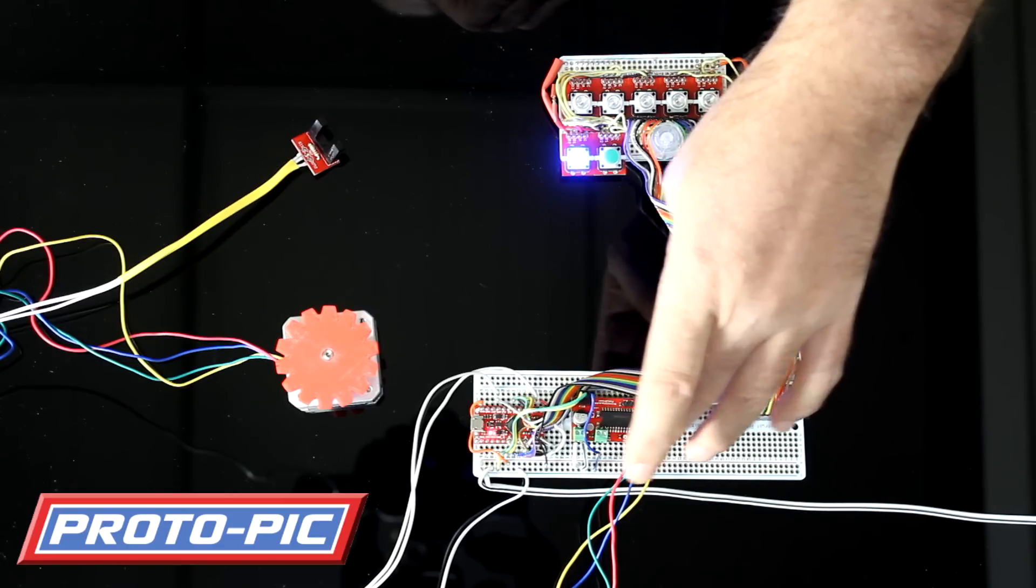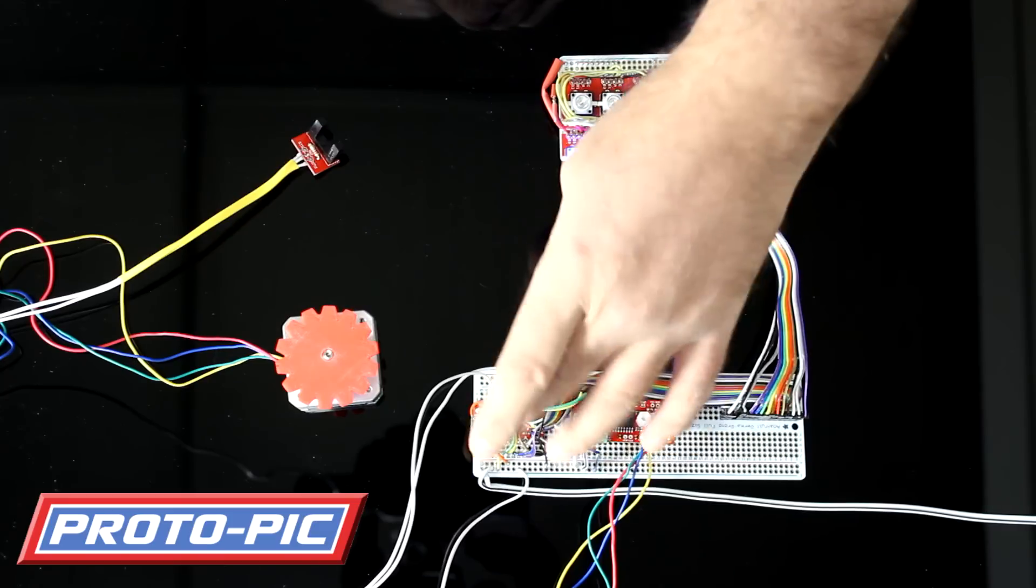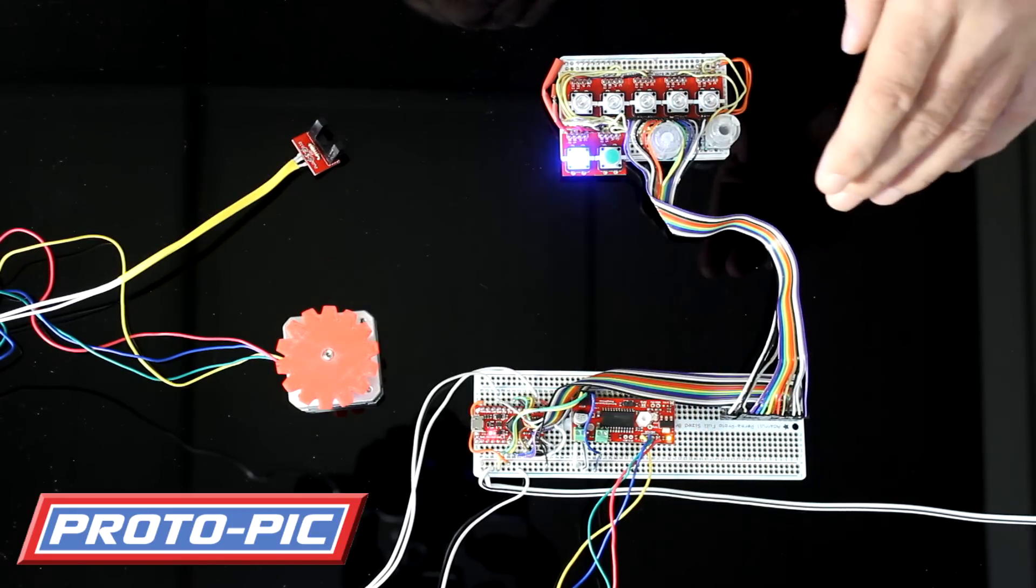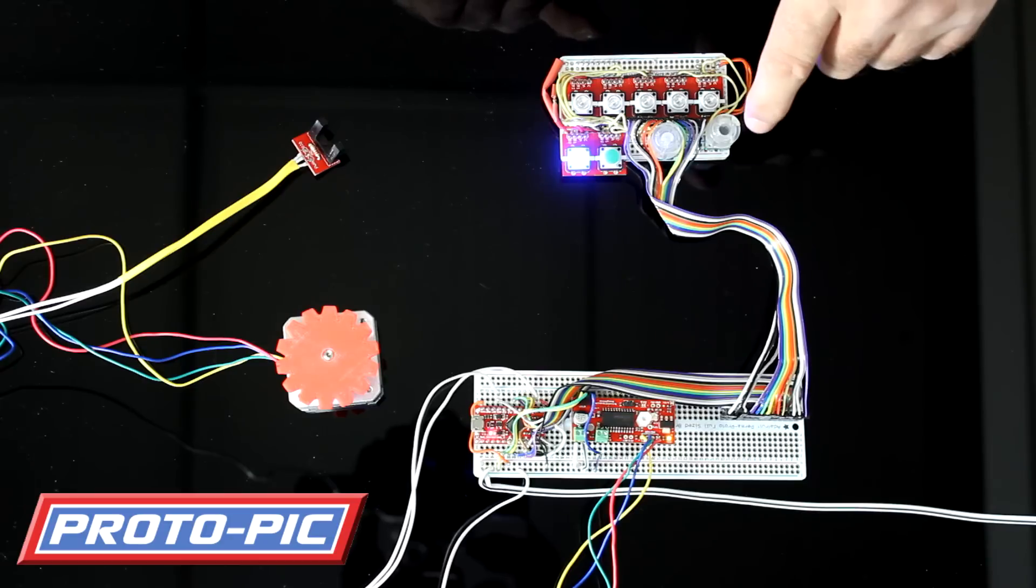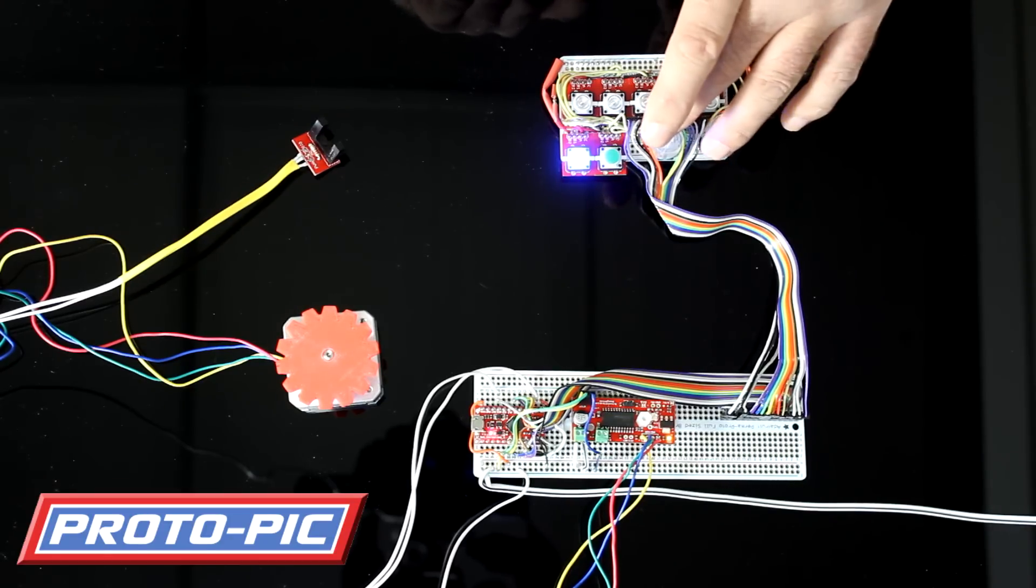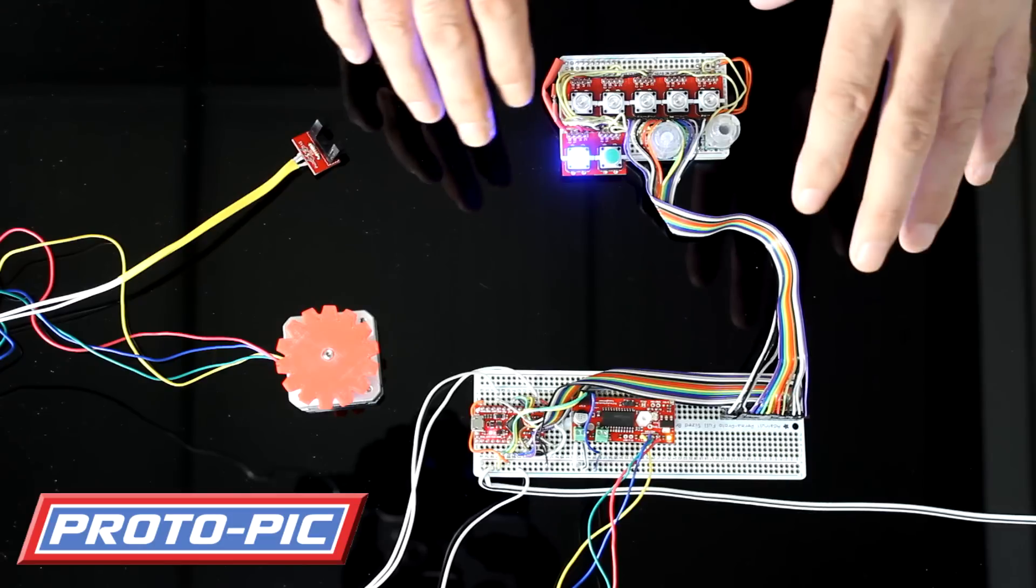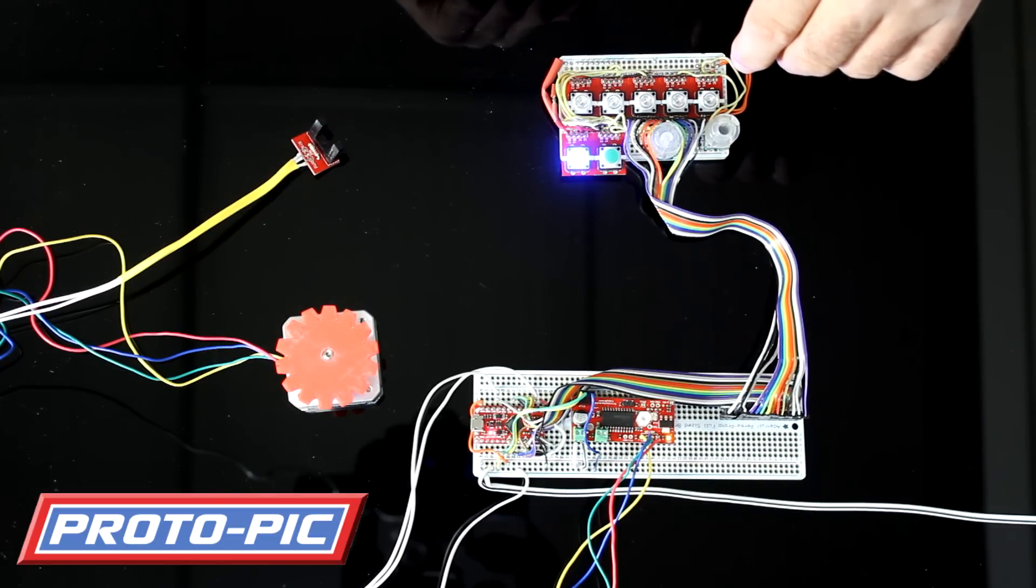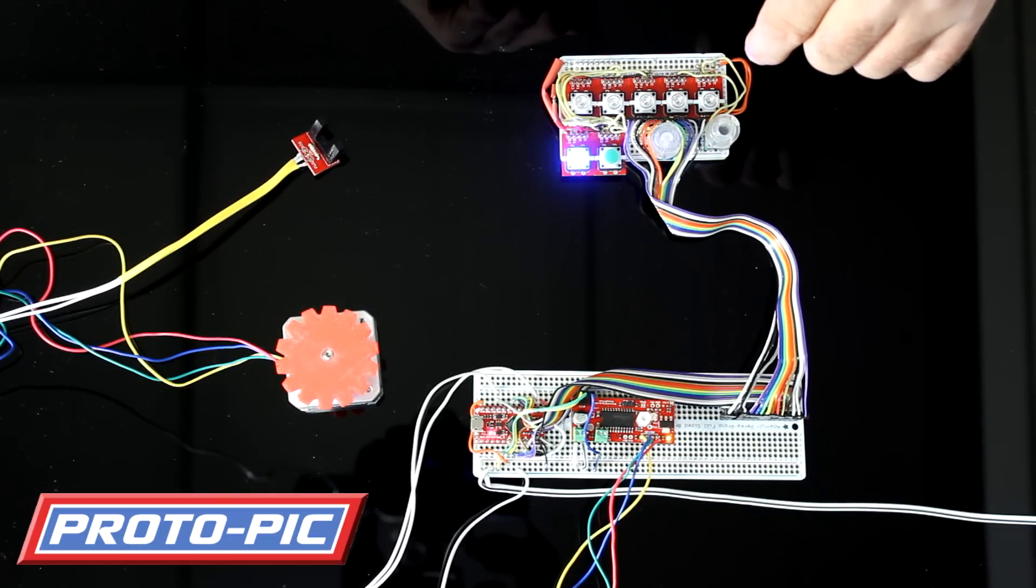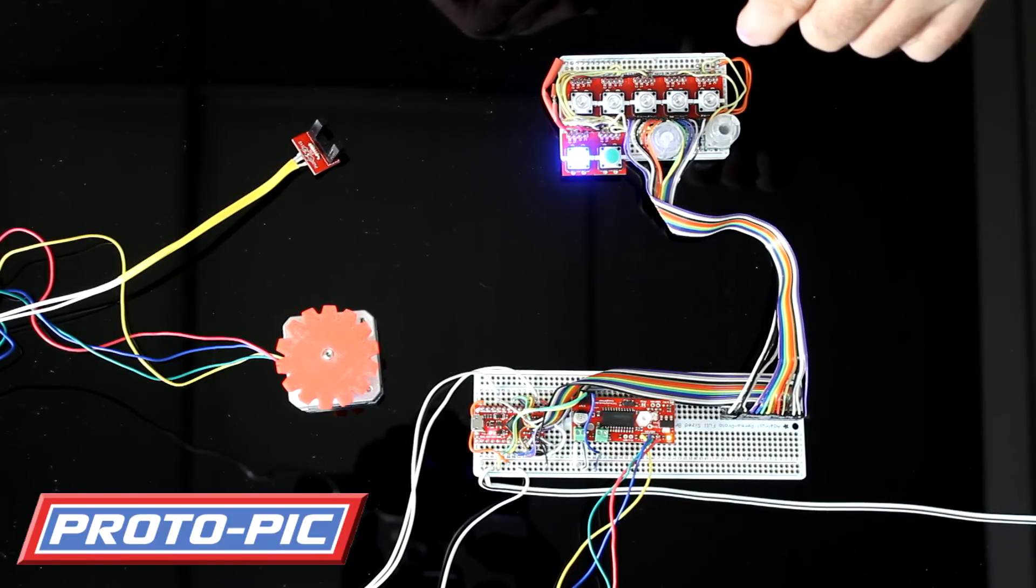And also information about how ladder logic works on an analog input, how we get the EZDriver stepper motor to work from here using stepping direction pins, how to work the rotary encoder and how to use a pot for a speed controller and all different bits and bobs like that and so that'll all be on learn.protopic.co.uk fairly shortly.